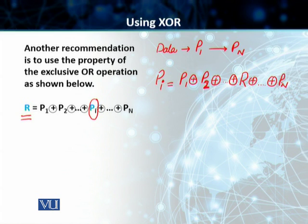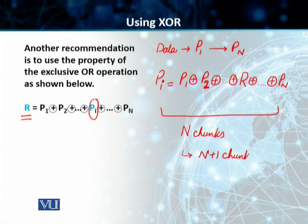So this essentially means that what we have done is we have divided the packet into N chunks. Our overall packet will be divided into N chunks, and what we are sending is N plus 1 chunks. If any chunk is lost or corrupted, then it can be created at the receiver side by using this extra chunk that we are sending by using exclusive OR.